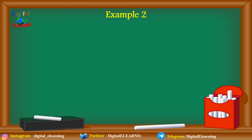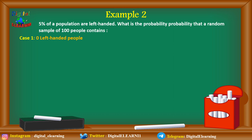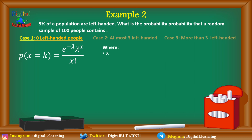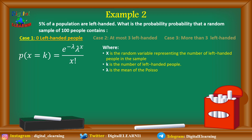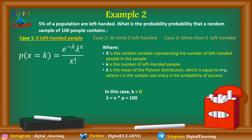Now let's take a more complex example. Five percent of the population are left-handed. What is the probability that a random sample of 100 people contains: case 1 — zero left-handed people; case 2 — at most two left-handed people; case 3 — more than three left-handed people? Here x is a random variable representing the number of left-handed people in a sample, k is the number of left-handed people we are interested in, and lambda equals n × p, where n is the sample size and p is the proportion of left-handed people. With n = 100 and p = 0.05, lambda = 5.